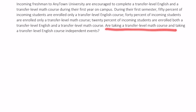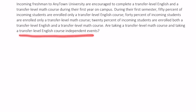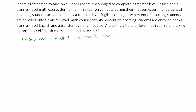Are taking transfer level math courses and a transfer level English course independent events? So let's begin by labeling our events. Let's say event E is: student is enrolled in a transfer level English course. Event M is: student is enrolled in a transfer level math course.